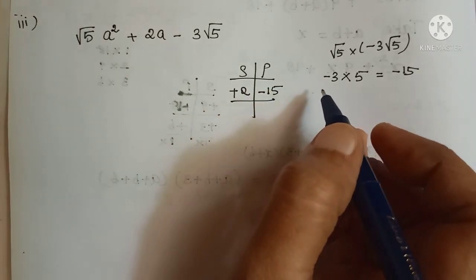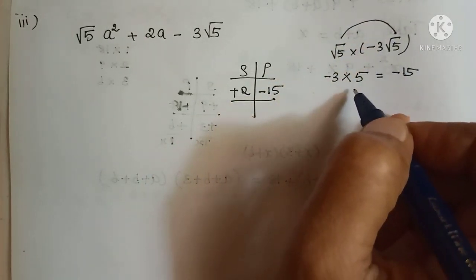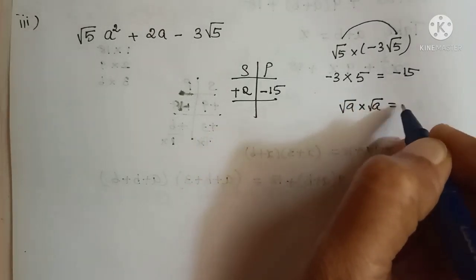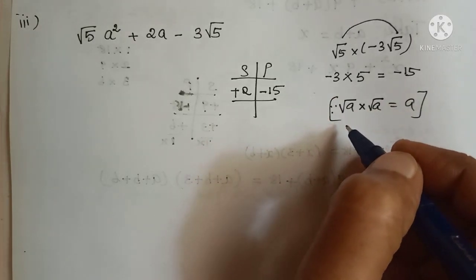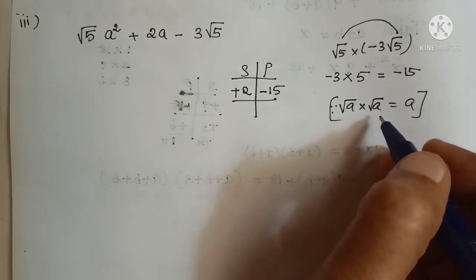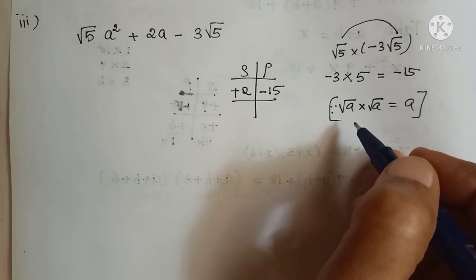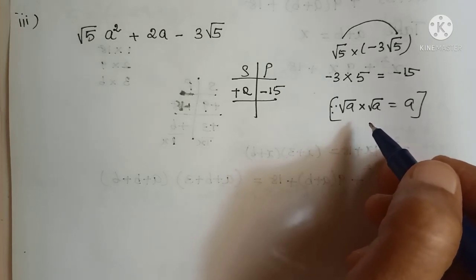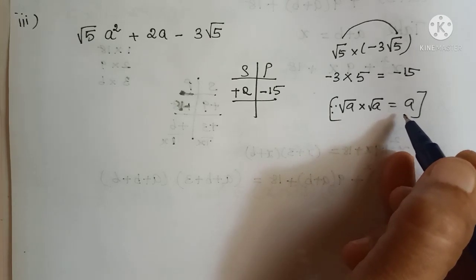Let me repeat: irrational numbers — root 5 into root 5 equals 5. The formula is root a into root a equals a. This is from the Chapter 2 irrational numbers concept. Even in standard 10, for square root sums you will apply this. Root 2 into root 2 equals 2 — same concept.